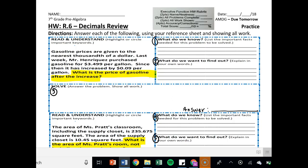Hey there CJMS students. Welcome to Homework R.6, Decimals Review. It's practice homework. You shouldn't be using a calculator and it's going to say answer each of the following using your reference sheet and showing all work. So each question really has three questions, but in all there's really kind of only five questions. So we can do this very simply.